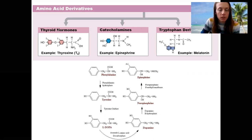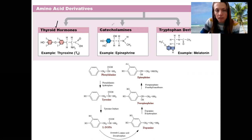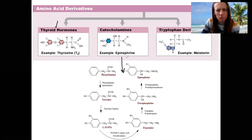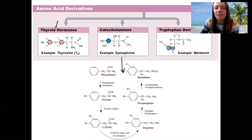Thyroid hormones are one big category. Catecholamines are another — all shown here. They are derived from tyrosine. Phenylalanine and tyrosine are shown there. And then the other category is a tryptophan derivative.